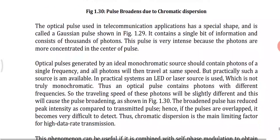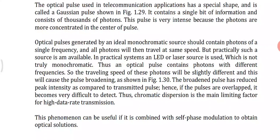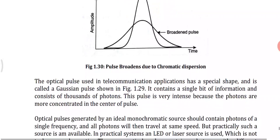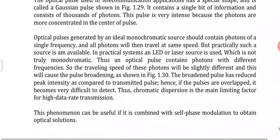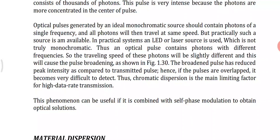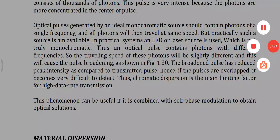This causes pulse broadening, as shown in the figure. The broadened pulse has a reduced peak intensity compared to the transmitted pulse — the amplitude becomes very low. The pulses then overlap, making it very difficult to detect which pulse was transmitted. Thus, chromatic dispersion is a main limiting factor for high data rate transmission. To minimize material or chromatic dispersion, we choose sources with a narrower spectral output width or operate at a longer wavelength.